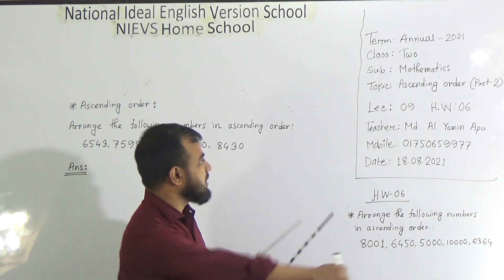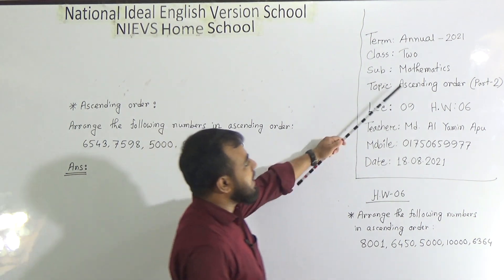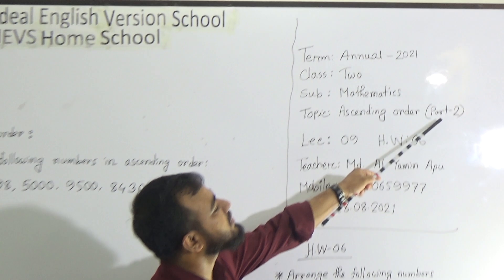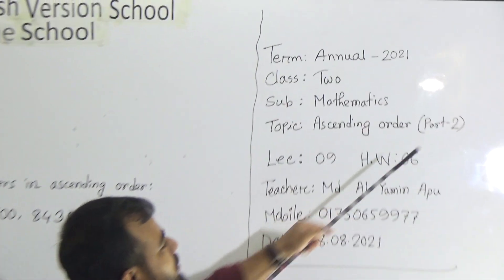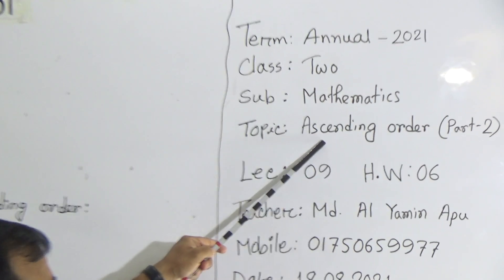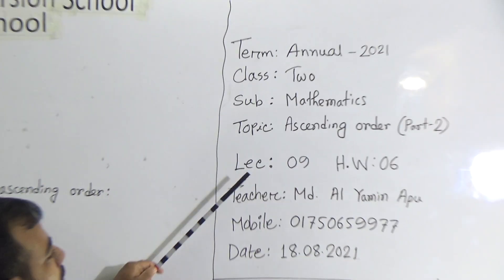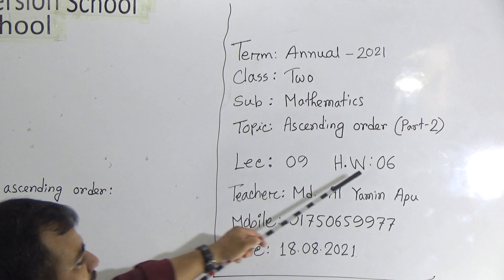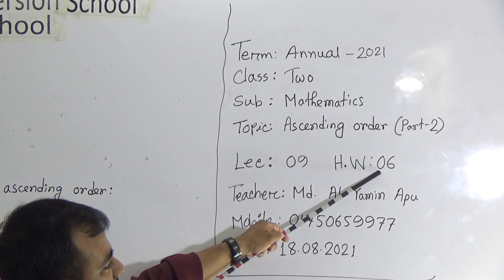Our today's topic is ascending order — it's part 2. This is the second class on the topic ascending order. Your lecture number is 9 and you have a homework today. Your homework number is 6.